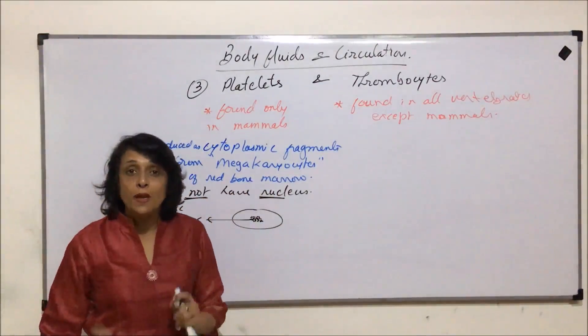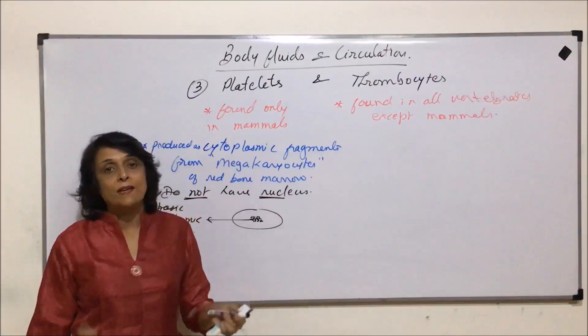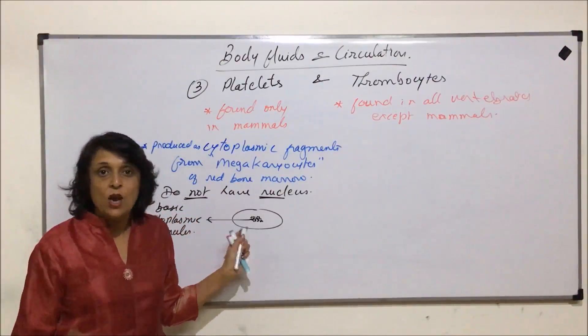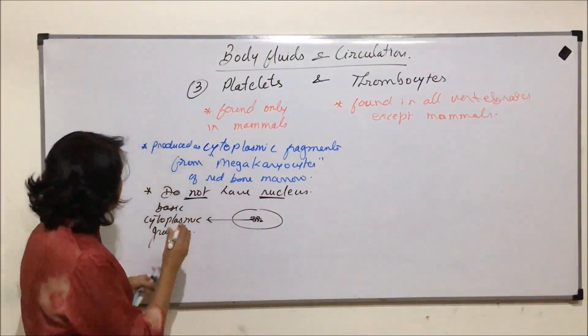That means out of three corpuscles, mature RBCs and platelets are enucleated. Only nucleated ones are WBCs.